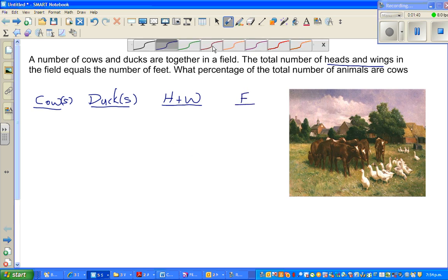This is a trial and error method. So let us start with one cow. If you've got one cow and say one duck, one cow is how many heads? One head. So how many heads for one cow and one duck? Well, you've got two heads and two wings. So that will give you four. Head plus wings will give you four. And how many feet? Four feet plus two, six feet. This is not the answer.